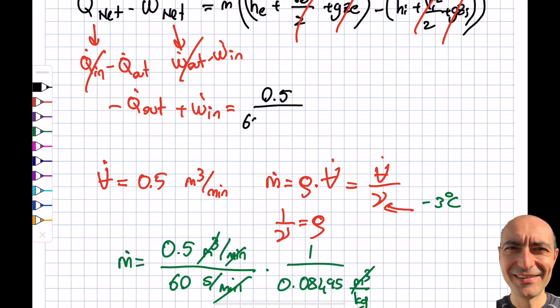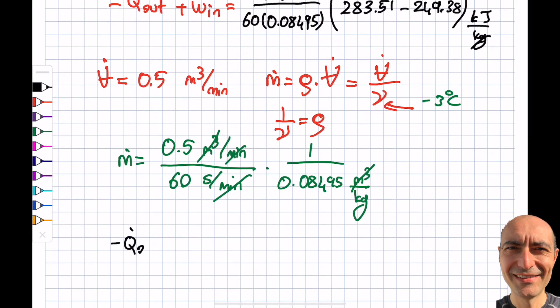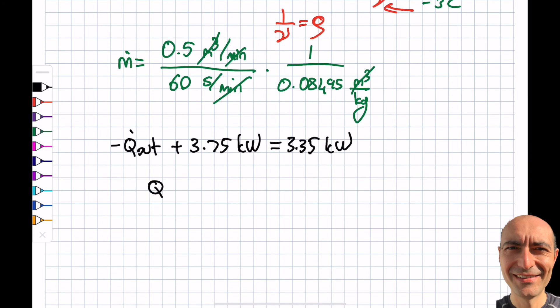And H exit is 283.51 minus 249.38. And these are in, let's make sure, kilojoule per kilogram. These are the final of this whole thing. It's kilogram per second. So you can see kilograms going still. I get kilojoule per second, which is kilowatts. So I'm consistent. And W, let's do it. Minus Q dot out. That's what being asked. Plus 3.75 kilowatts. That's what is given as. Will be equal to 3.35 kilowatts when I multiply those things. So you can see over here that my Q dot out turns out to be 0.4 kilowatts. Or this is 400 watts.